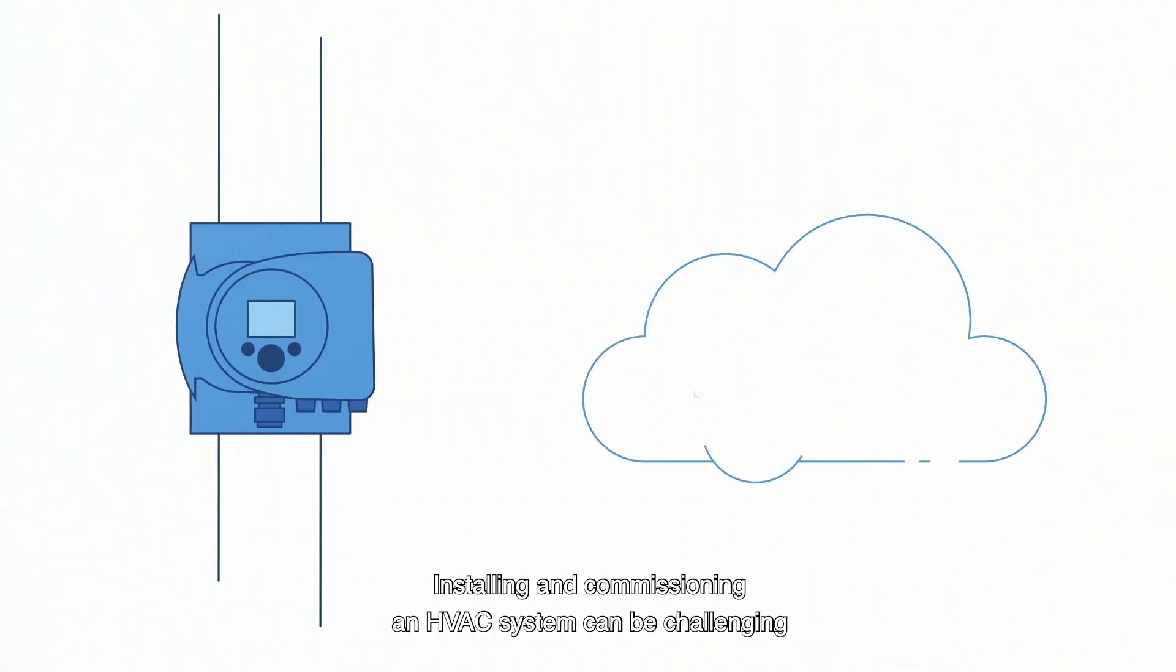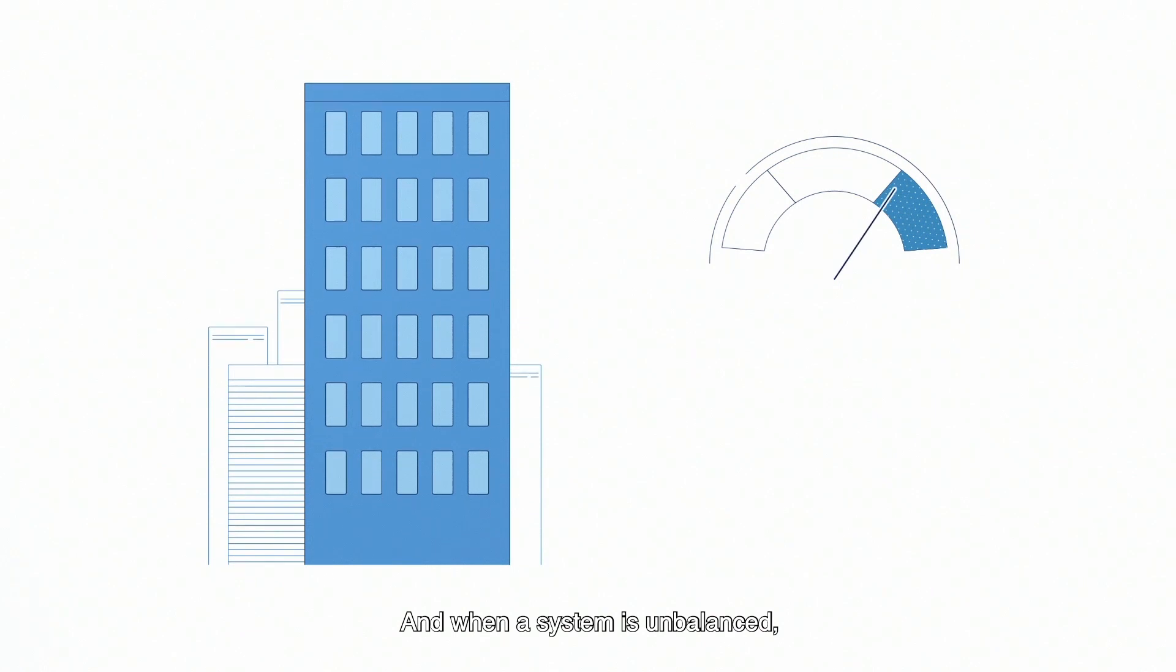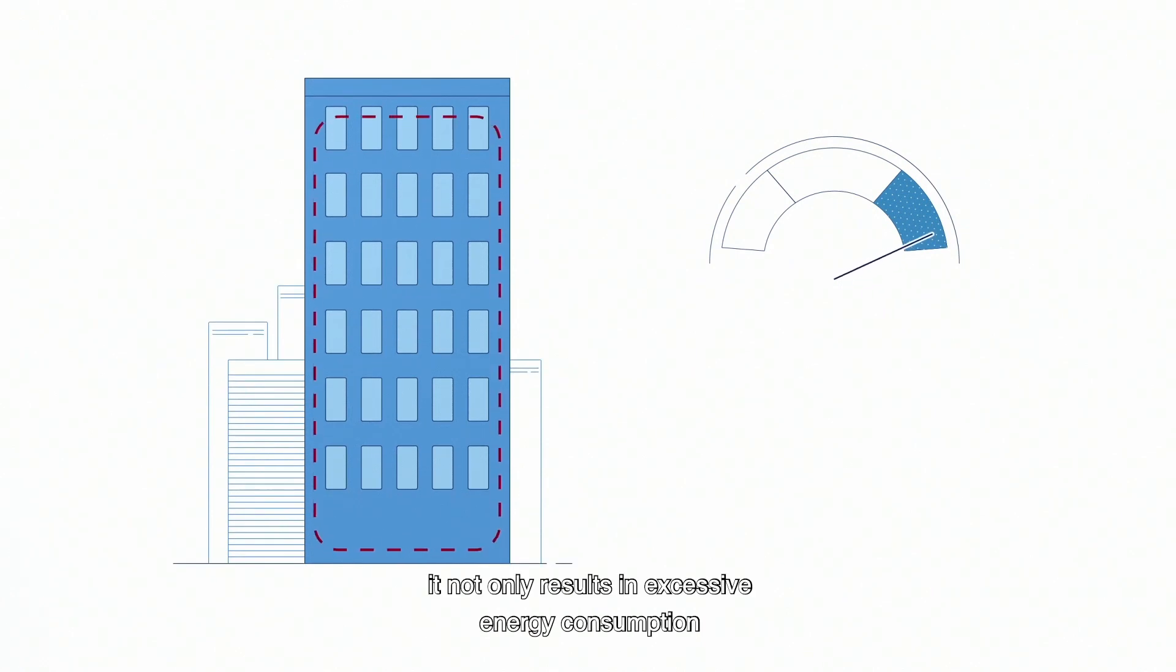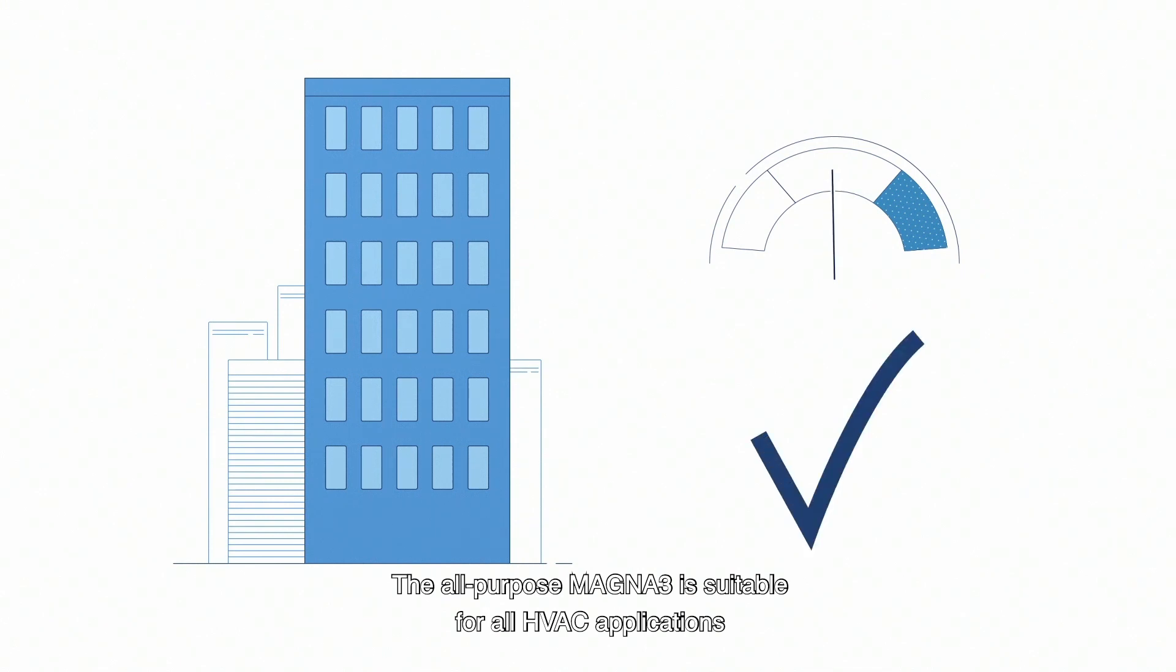Installing and commissioning an HVAC system can be challenging due to varying applications and system demands. When a system is unbalanced, it not only results in excessive energy consumption but an uneven distribution of heating or cooling in your building.